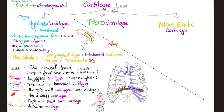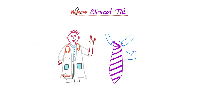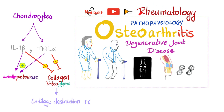Here's the epiphyseal growth plate and here are the articular cartilages. Let's make it clinical. Do you remember my rheumatology playlist? We had a video about osteoarthritis, also known as degenerative joint disease. The pathophysiology of it involves the following.